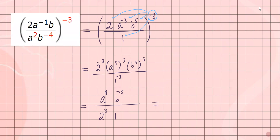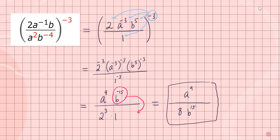Finally, make all negative exponents positive by switching their places. B to the negative 15 becomes b to the positive 15 on the bottom. A to the ninth is already positive, so it stays on top. Two to the third is eight. Everything is now a positive power, giving us a to the ninth over 8 b to the fifteenth as our final result. I hope this makes sense — I will see you next time.